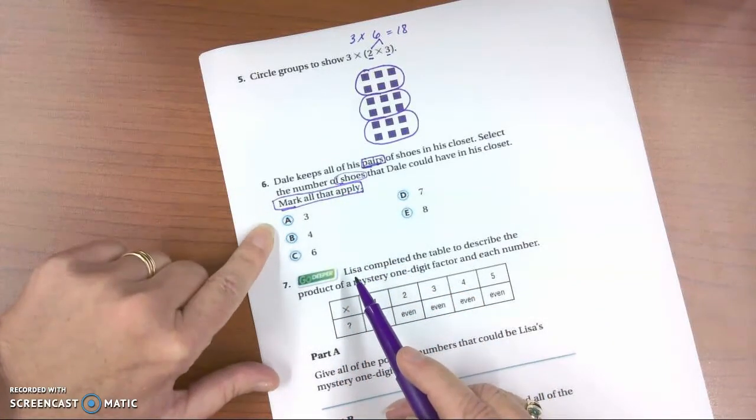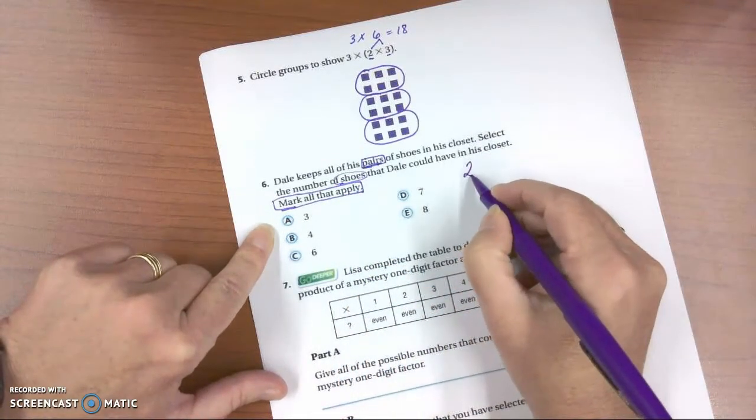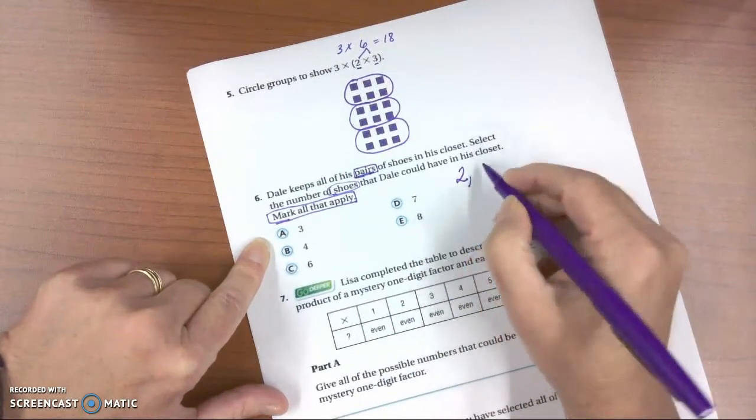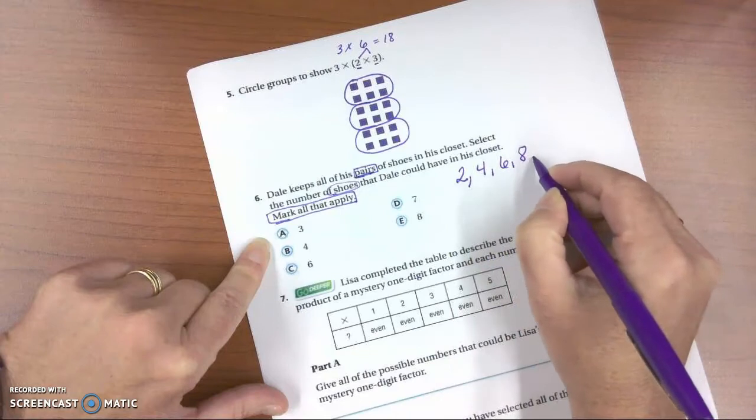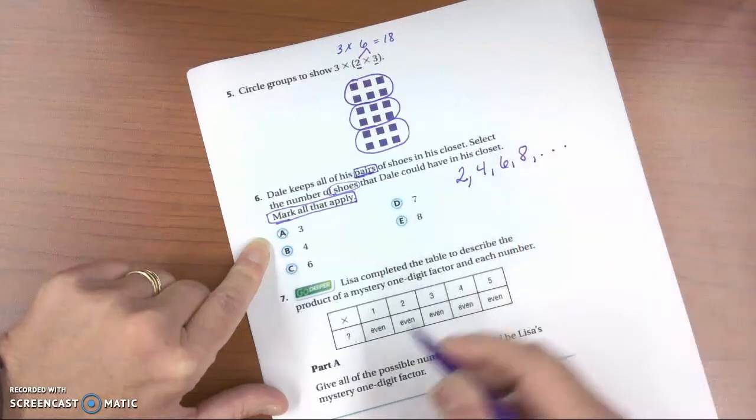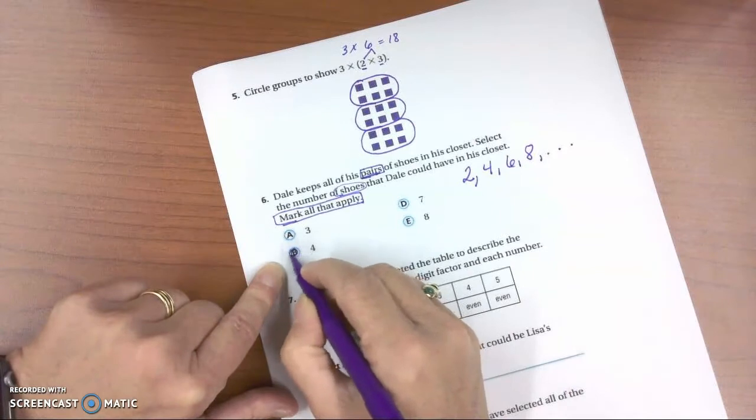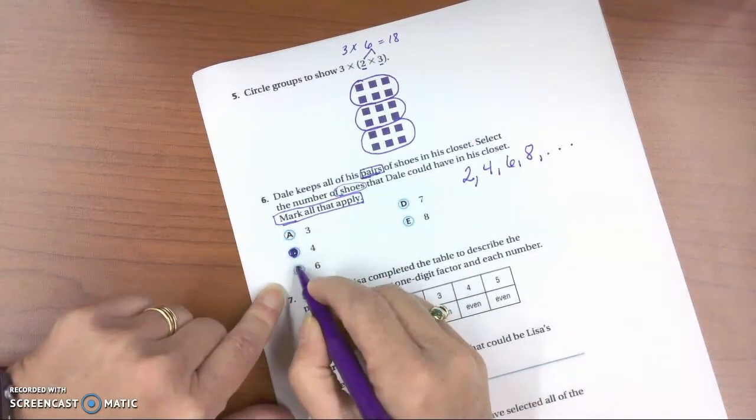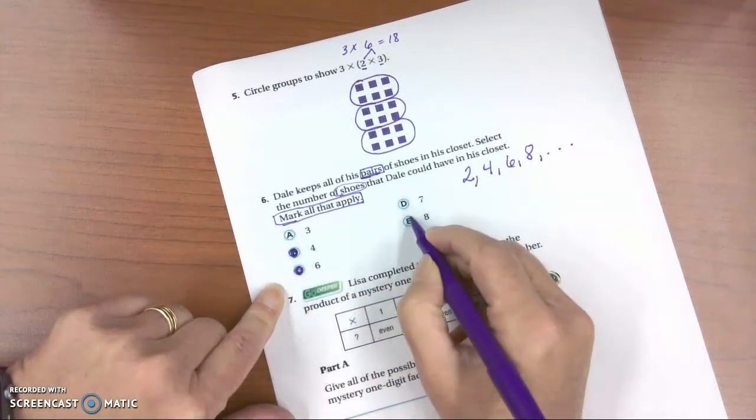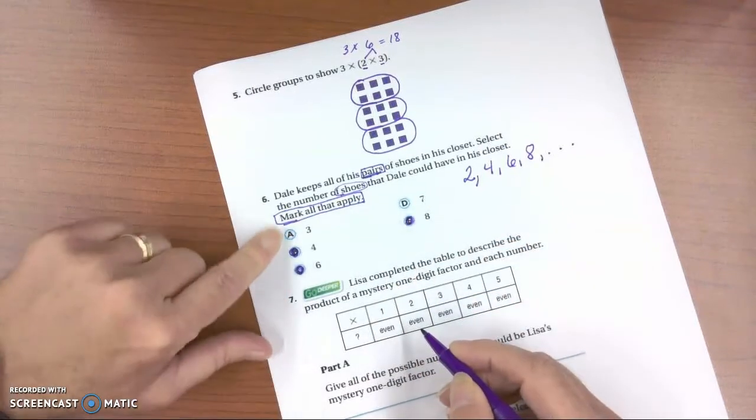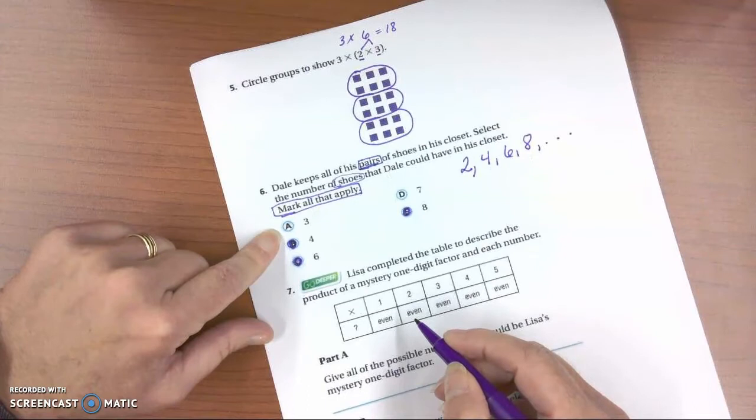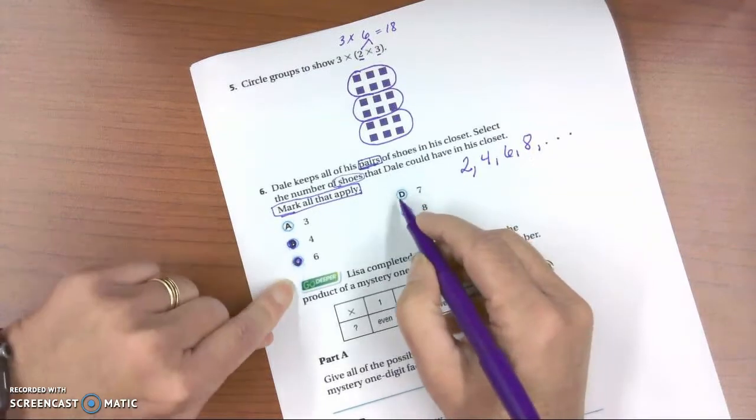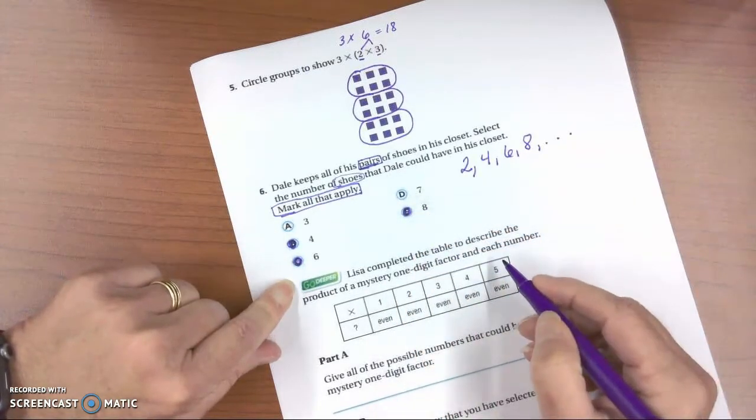Well, shoes come in pairs, so that means they're groups of 2. So 2, 4, 6, 8. Those are, and we could continue that pattern. So he could have 4 shoes, 6 shoes, and 8 shoes in his closet. Could not have 3 because that would not be groups of 2. Shoes come in 2's. Or 7 because that is not an even number. That's one way they're asking us about even numbers.